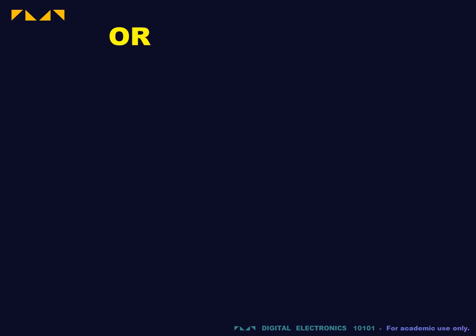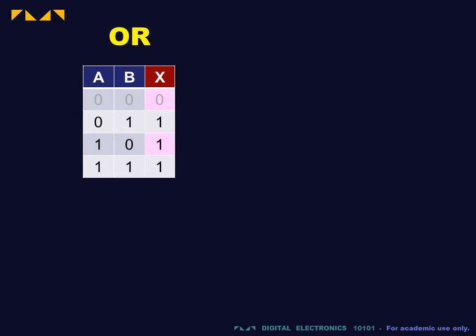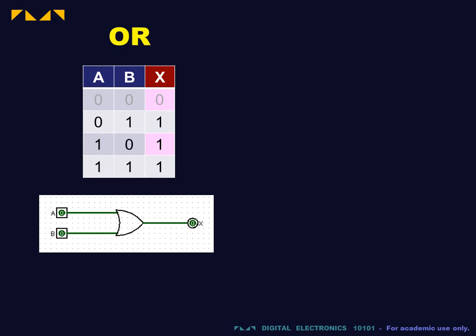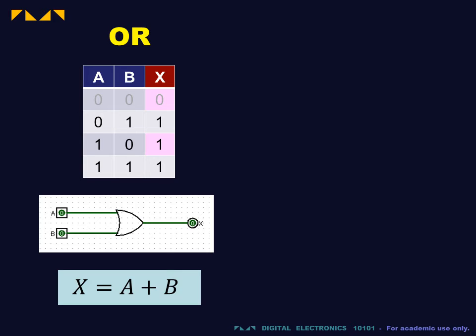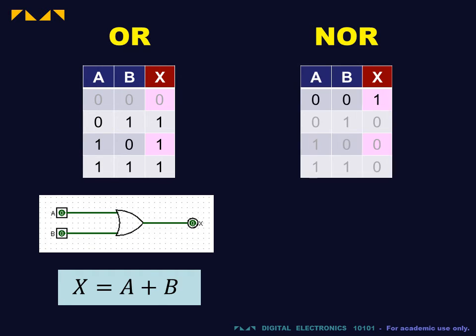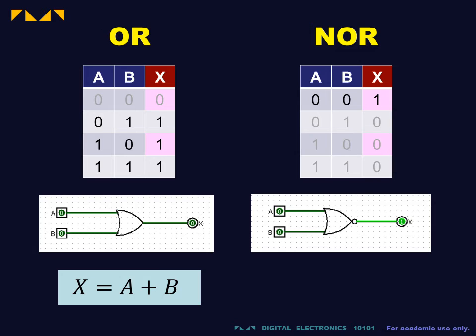For the OR gate, also called the inclusive OR gate, the output is true if and only if either input is true. The logic symbol looks a bit like the AND symbol, so be careful when you draw it. The Boolean expression reads x is equal to a OR b. The inverse of the OR gate is the NOR gate.